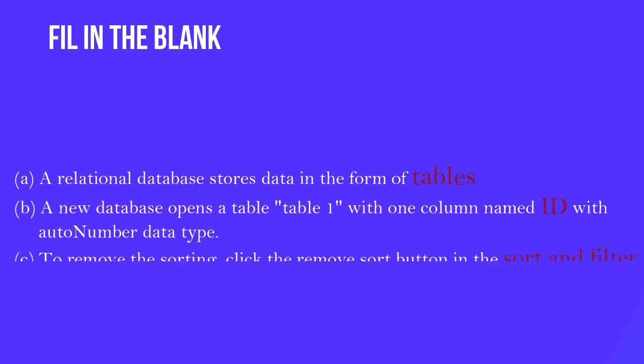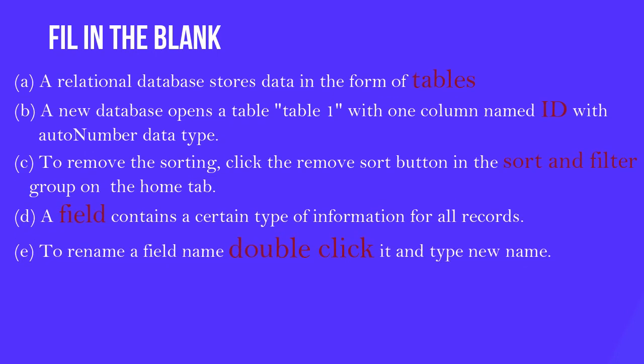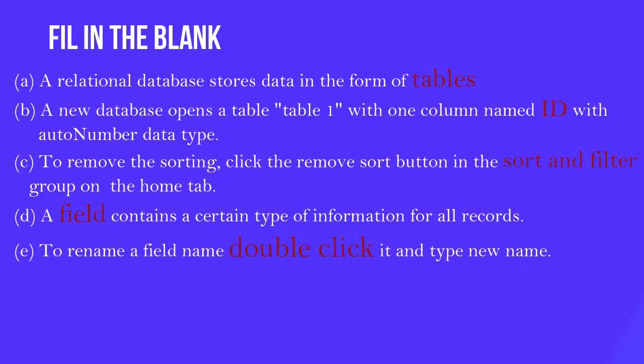First question: A relational database stores data in the form of tables. B: A new database opens a table, Table 1, with one column named ID with auto number data type.